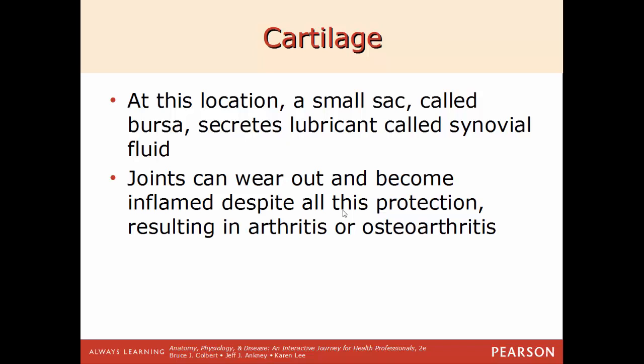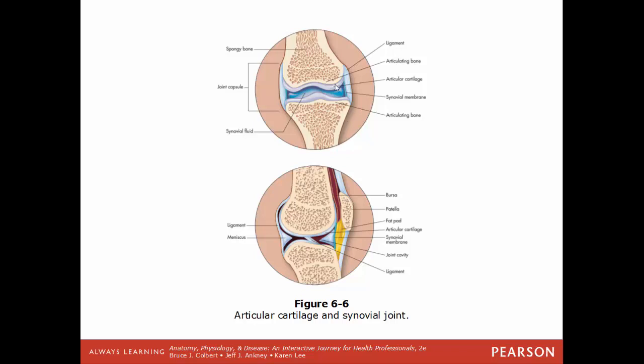At places like joints, you'll find a small sac called the bursa, which secretes a lubricant fluid called synovial fluid. This helps protect the bones so they don't wear down and produces less friction between them. If these joints didn't have synovial fluid, the bones would rub against each other much more, breaking down much quicker and leading to arthritis or osteoarthritis. The space between two bones forming a joint — such as the knee joint between the femur and the tibia — is filled with synovial fluid.